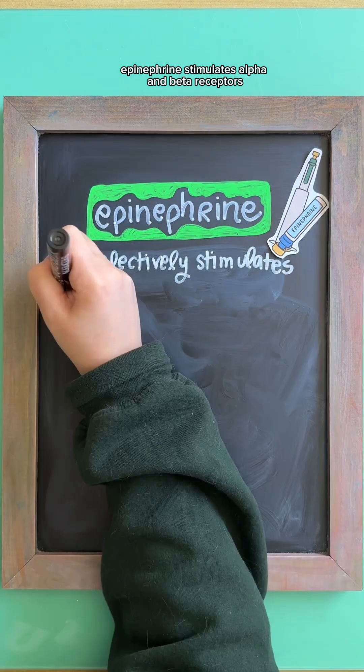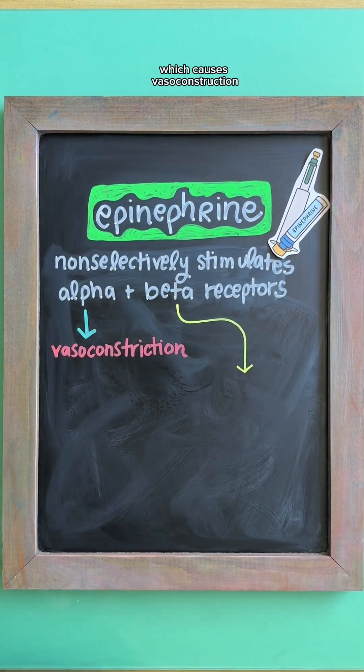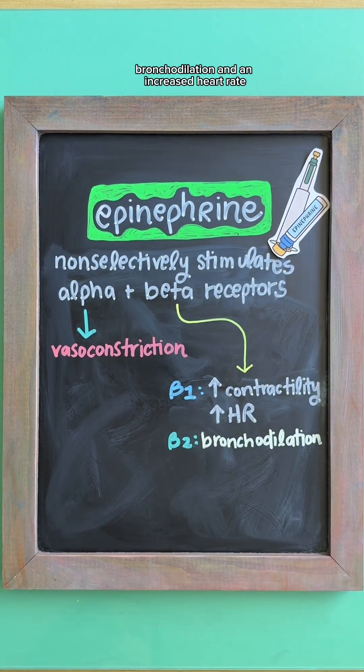Epinephrine stimulates alpha and beta receptors, which causes vasoconstriction, bronchodilation, and an increased heart rate.